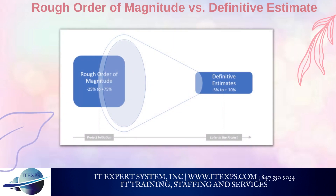Rough Order of Magnitude vs. Definitive Estimate. The obvious difference between these two types of estimates is accuracy — the ROM is rather inaccurate with a broad range of possible outcomes. It is therefore typically used in project initiation phases where a ballpark figure is sufficient to get a project started. The definitive estimate is determined in the course of the project when more information and resources for accurate estimates are available.